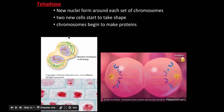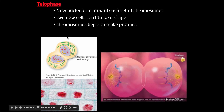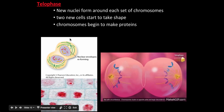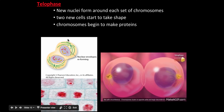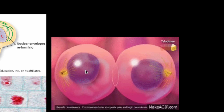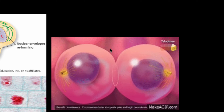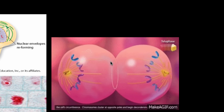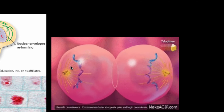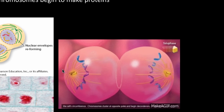The fourth phase is telophase. Telophase is basically creating another nucleus on each side of the cell. The new cells start to take shape and stretch out, chromosomes begin to make new proteins, then go back into the nucleus, shrink down, and fade away. A new nucleus is forming on each side, and spindle fibers and centrioles start to go away as those new cells take shape.